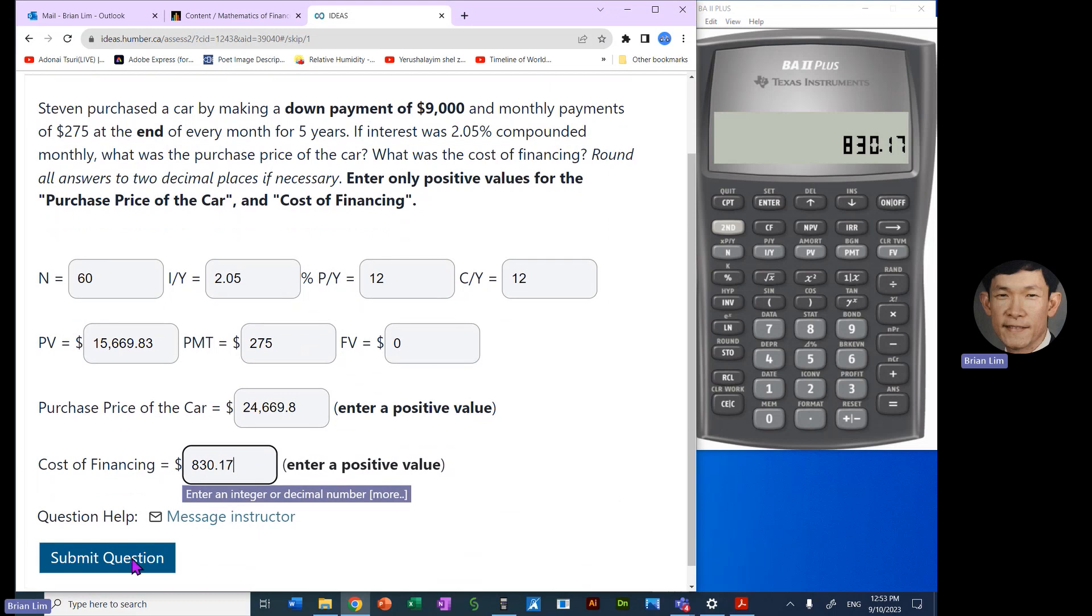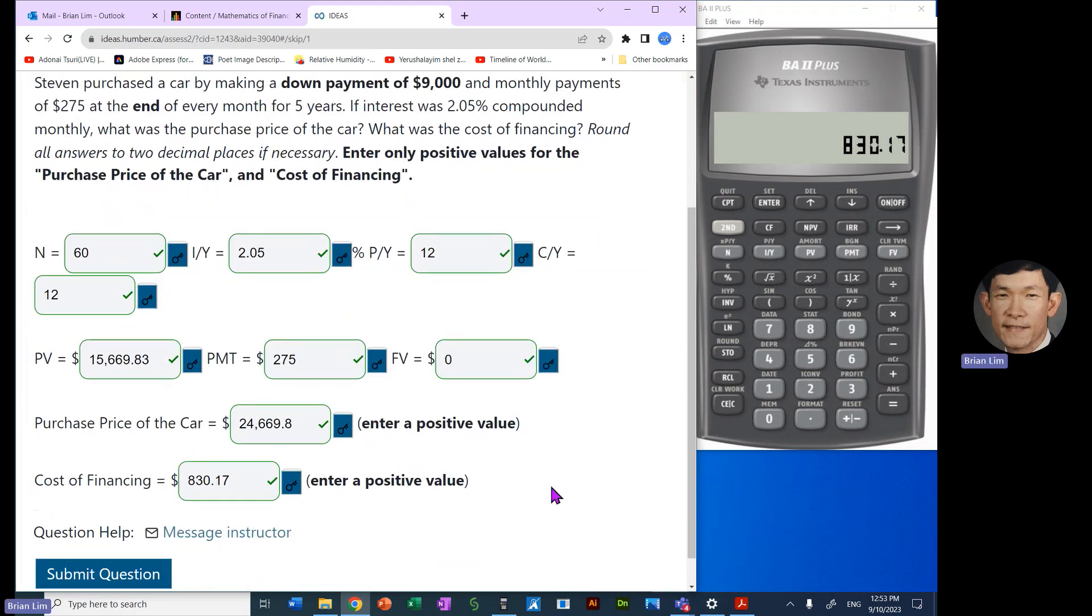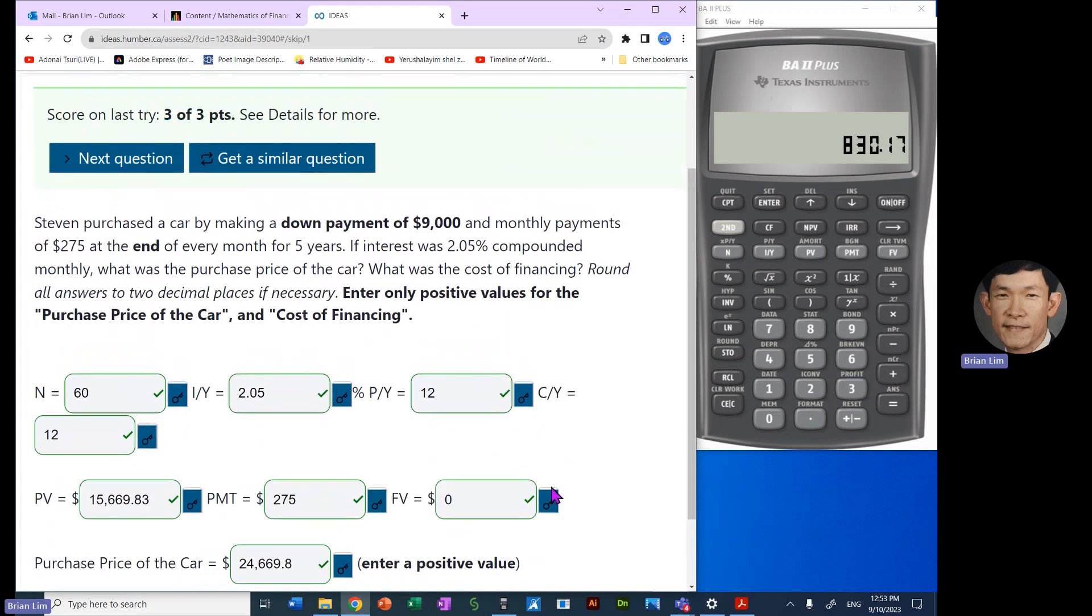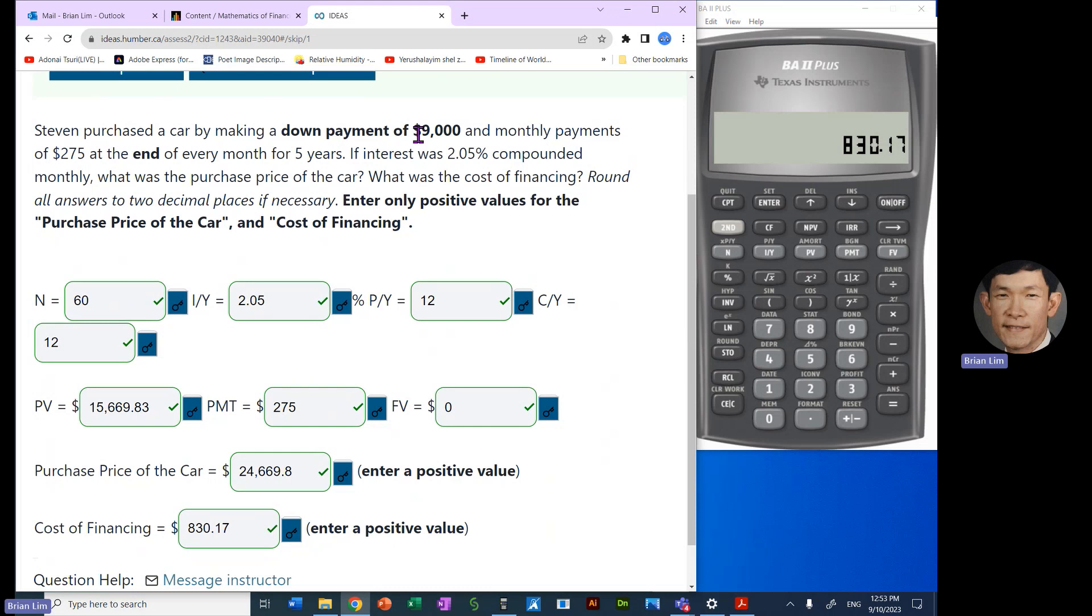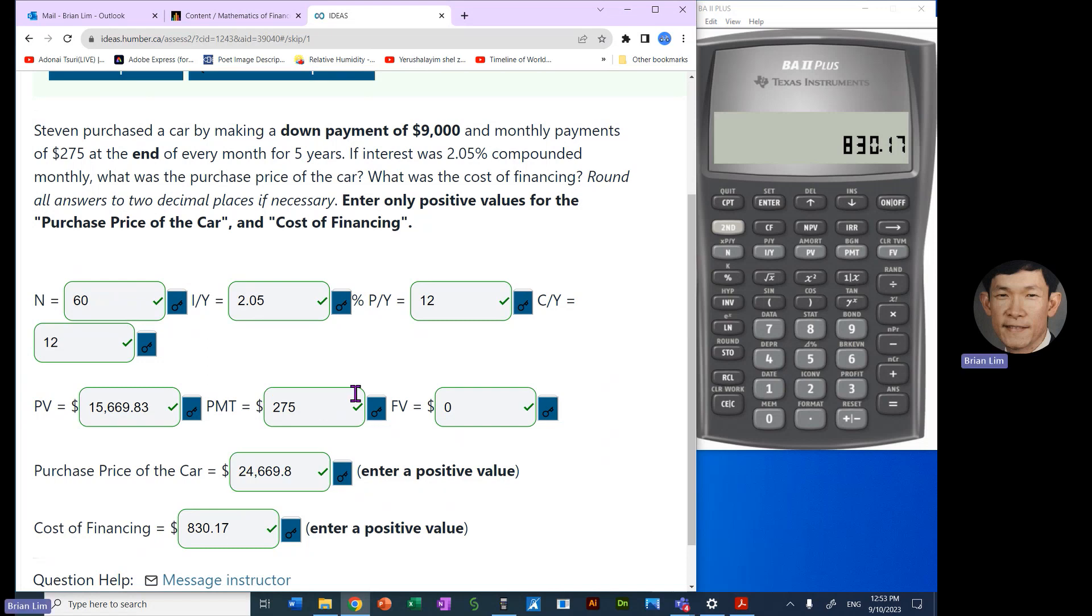Okay, so now let us submit and all is correct. So that is how it's done. So just to recap. There was a down payment, but that is reserved to get the purchase price of the car. So the information is entered and then we compute the present value. To that present value, we must add the down payment. And that is why $15,669.83 plus $9,000 was $24,669.83.